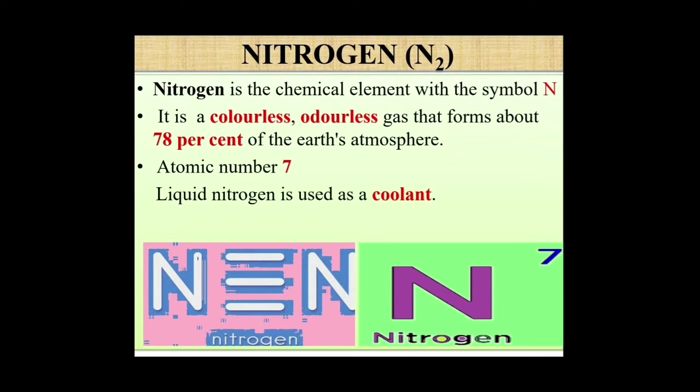What is nitrogen? Nitrogen is a colorless, odorless, covalently triple bonded element. It forms about 78% of Earth's atmosphere. Liquid nitrogen is used as a coolant and is also used in cryopreservation of blood and reproductive cells.